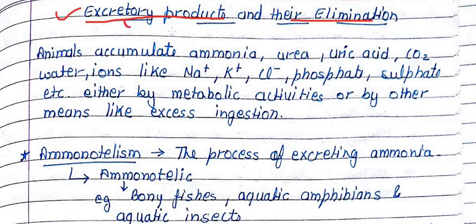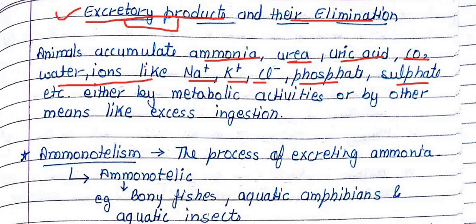First of all, let's talk about what excretory products are. Excretory products include: ammonia, urea, uric acid, CO2, water, and ions such as sodium, potassium, calcium, phosphate, and sulfate. These are all excretory products.